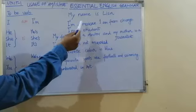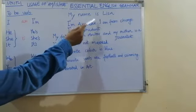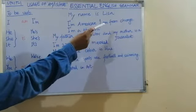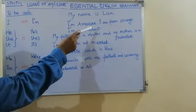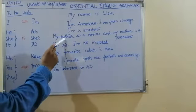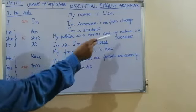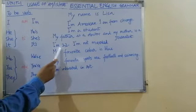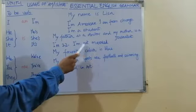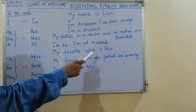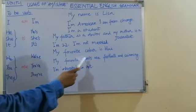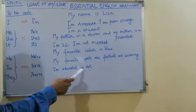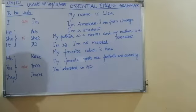I am American. My name is Lisa. I am from Chicago. I am a student. My father is a doctor and my mother is a journalist. I am 22. I am not married. My favorite color is blue. My favorite sports are football and swimming. I am interested in art.